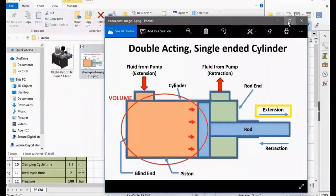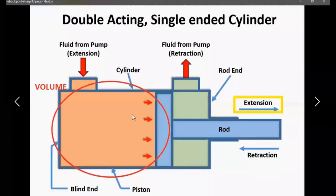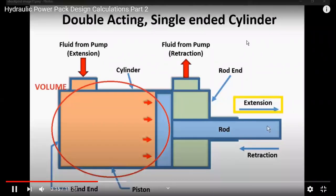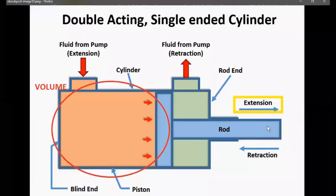So this is a hydraulic cylinder, a double acting single ended cylinder. You have the main body and this is the bore diameter. Bore means the hole where all this oil is going. So all these sizes we have in the Excel sheet.